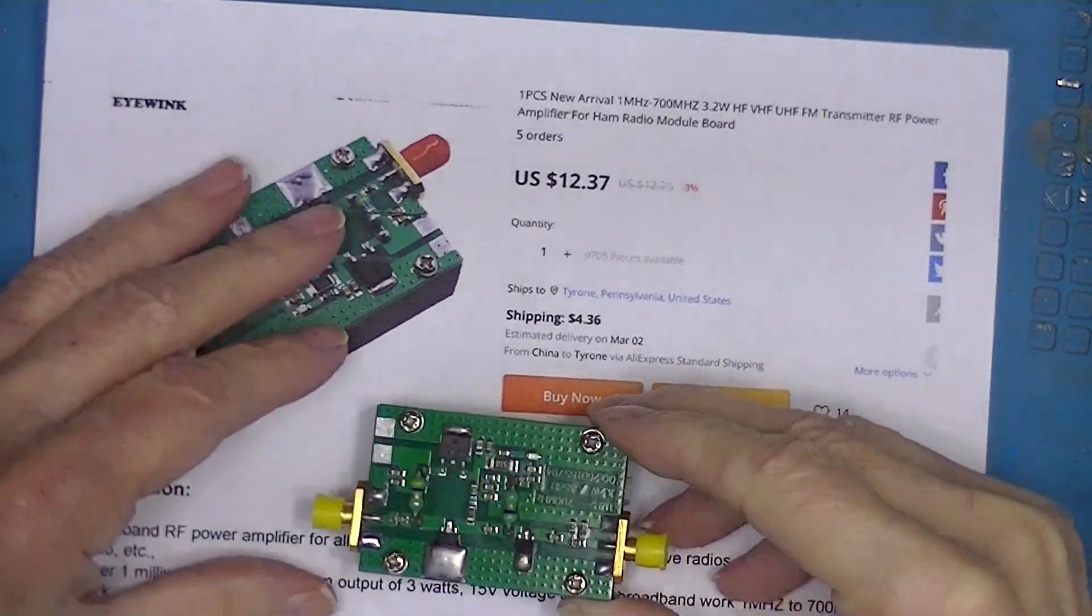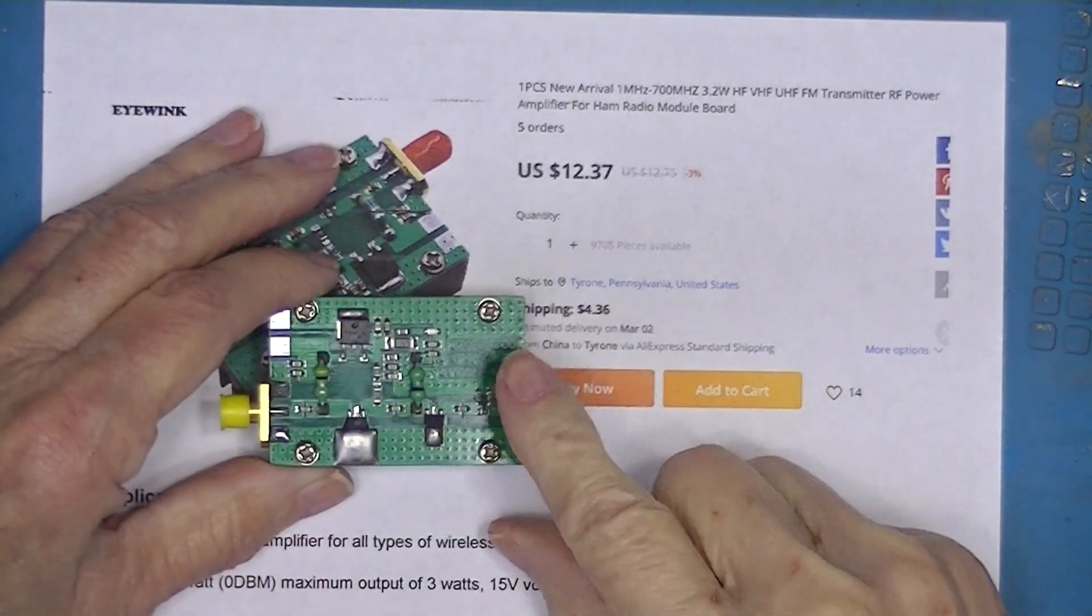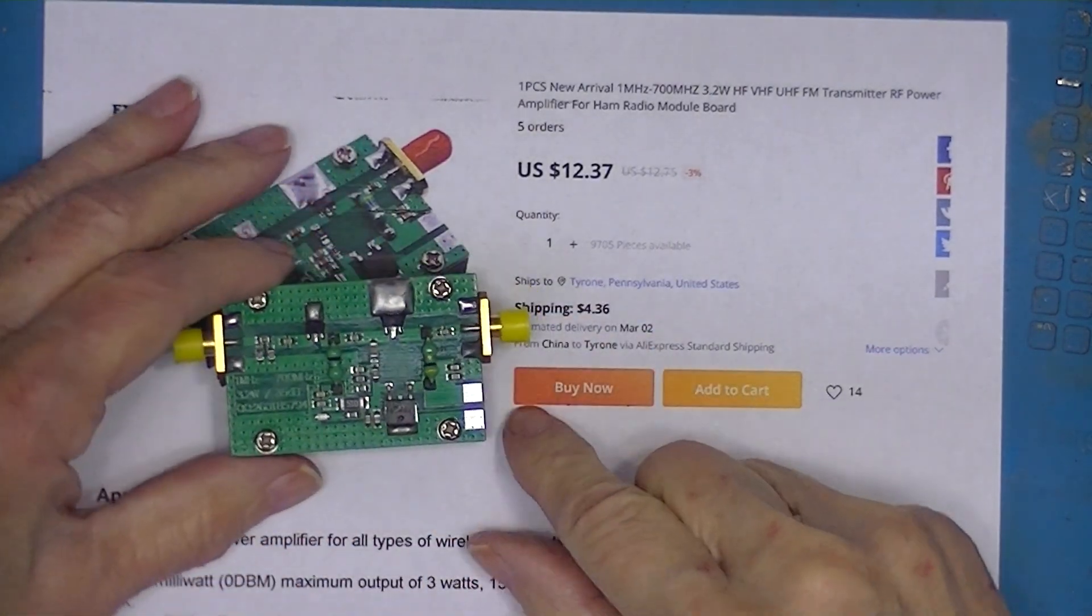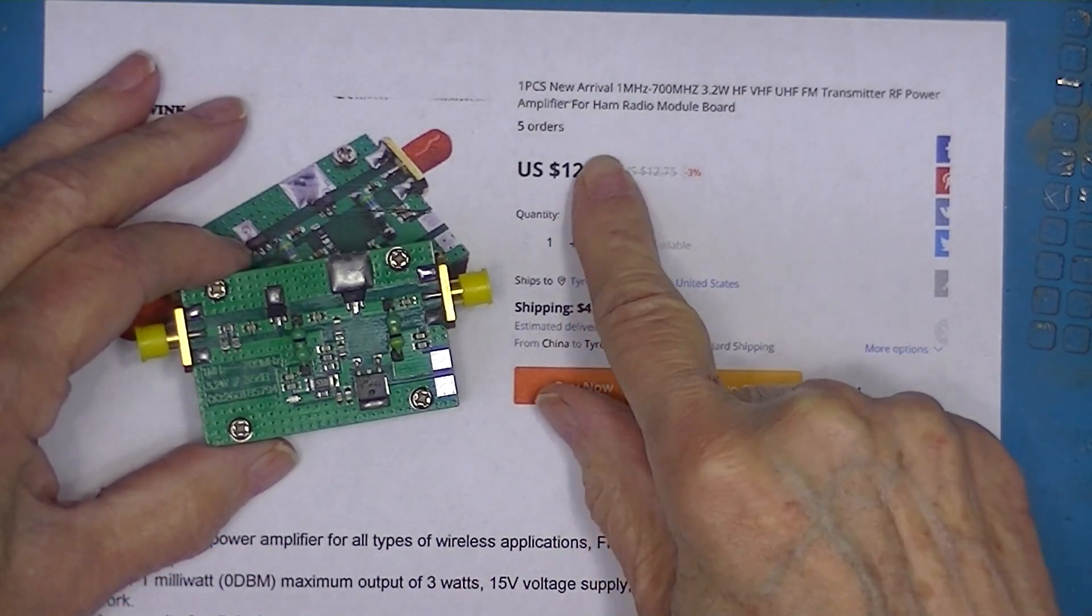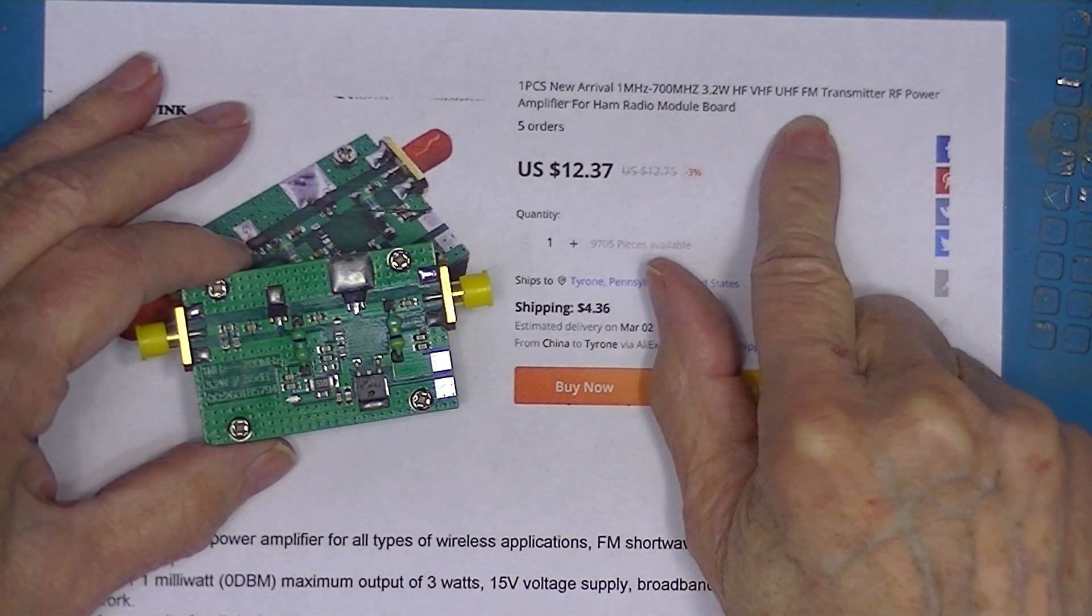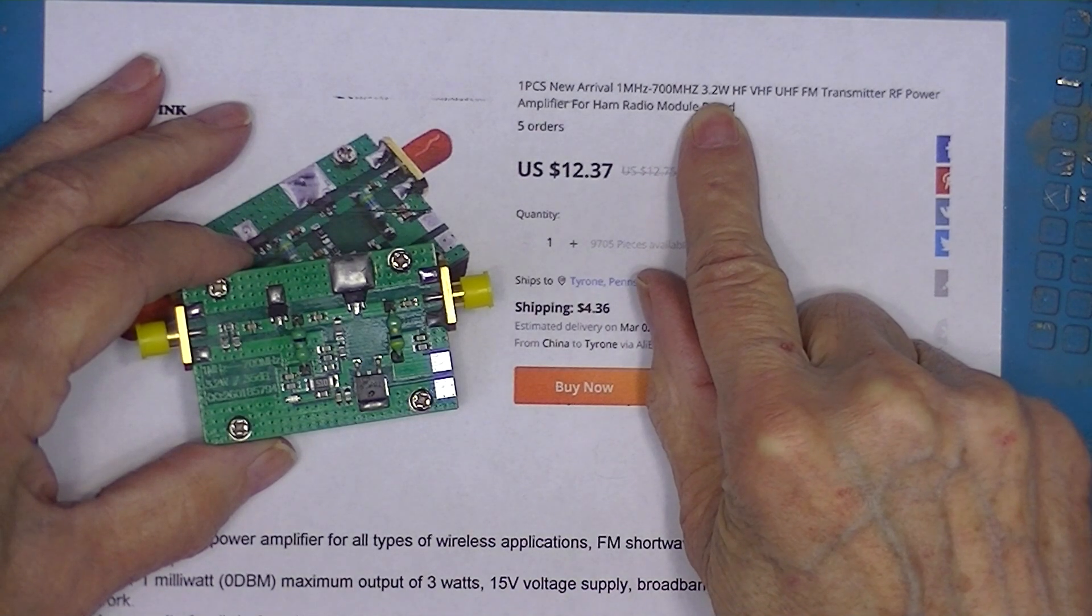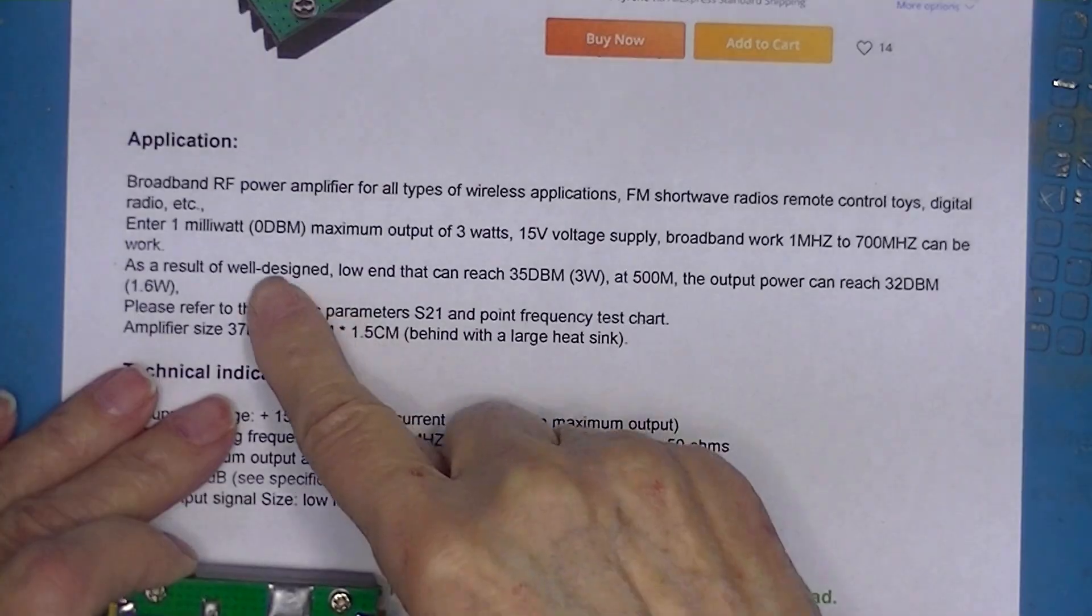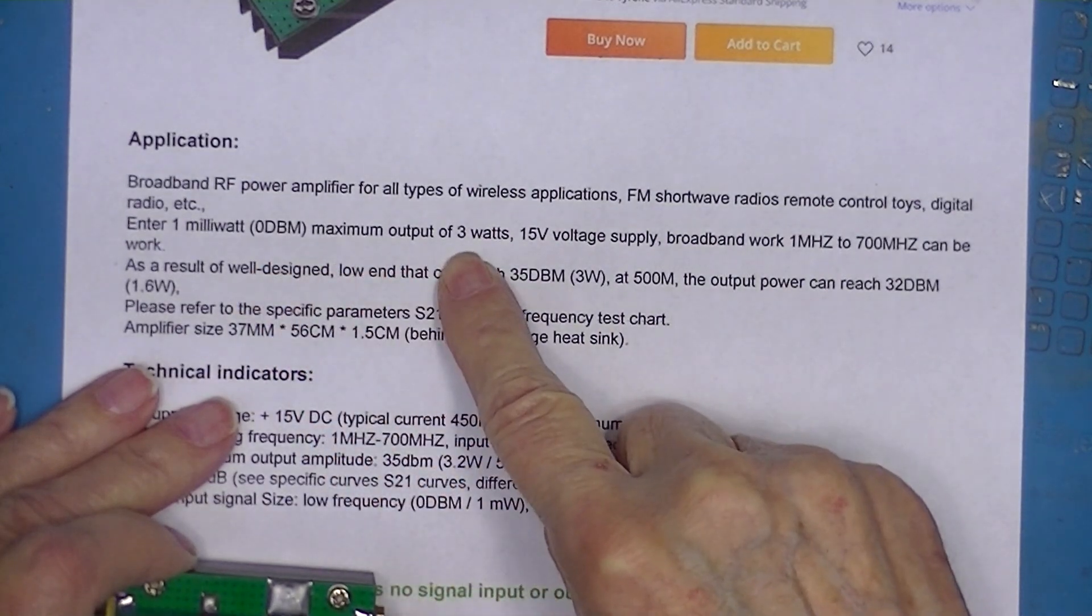I bought this little RF amplifier from Aliexpress. I probably showed it in an earlier mail video. It looks like this. It cost about $18 and they say it's capable of 3 watts, 3.2 watts from 1 megahertz to 700 megahertz. So 1 milliwatt input, 3 watts output at 15 volts.